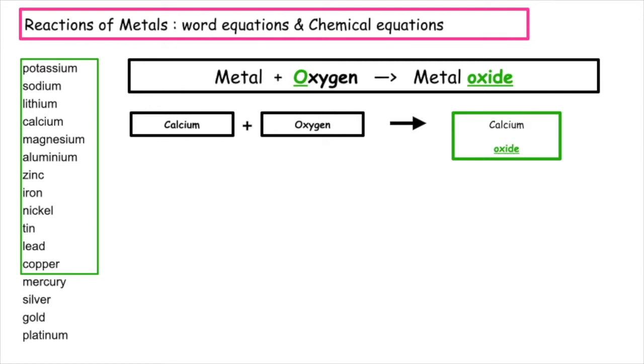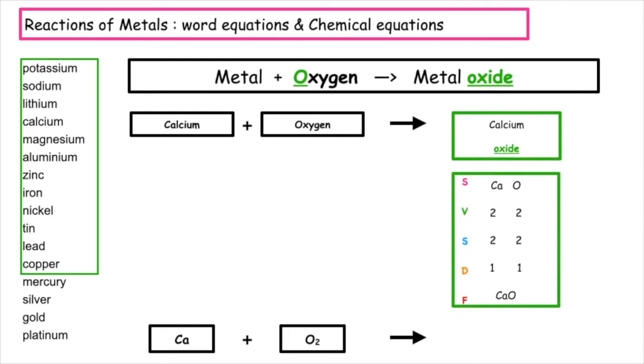The formula for calcium is Ca. Oxygen is a diatomic element, so it exists as O2. And when I do my SVSDF for calcium oxide, I get the formula CaO.